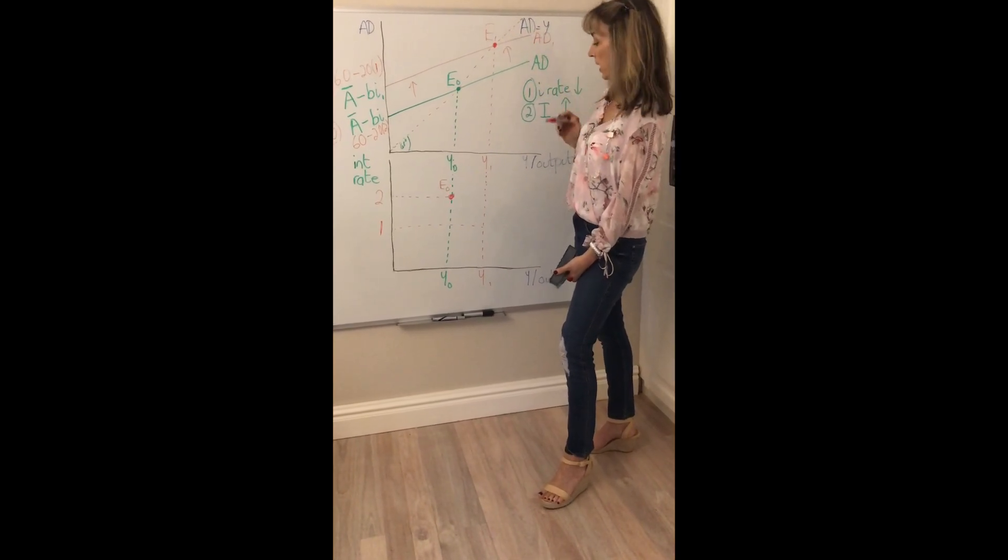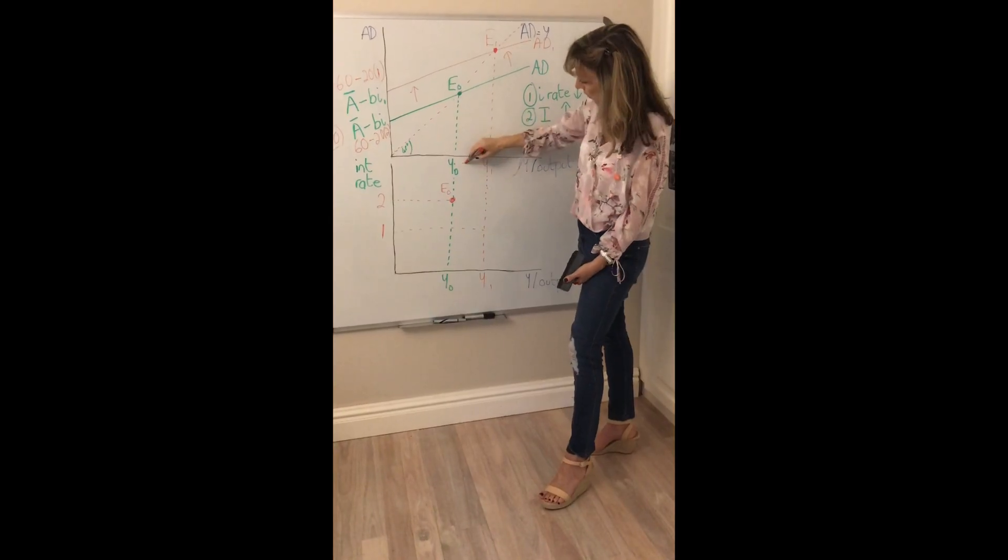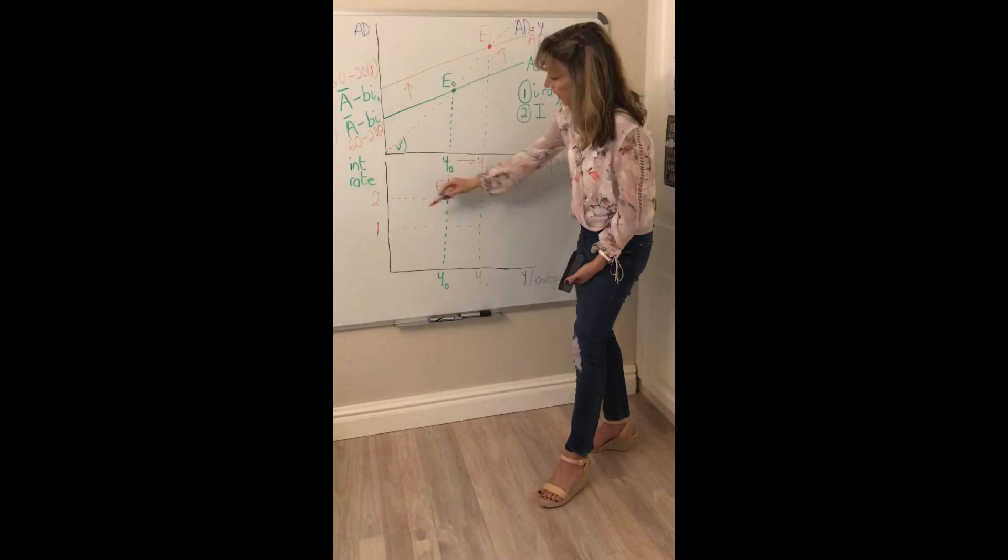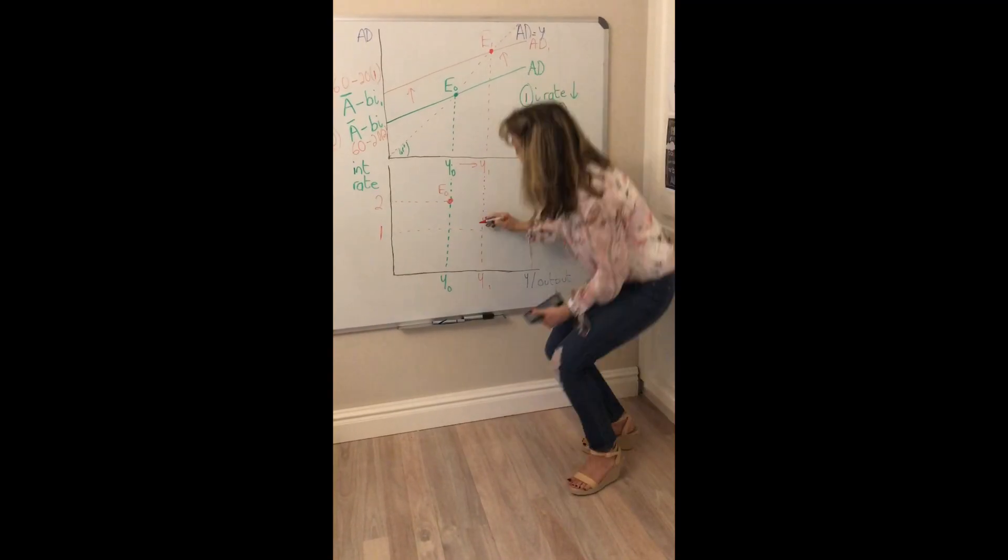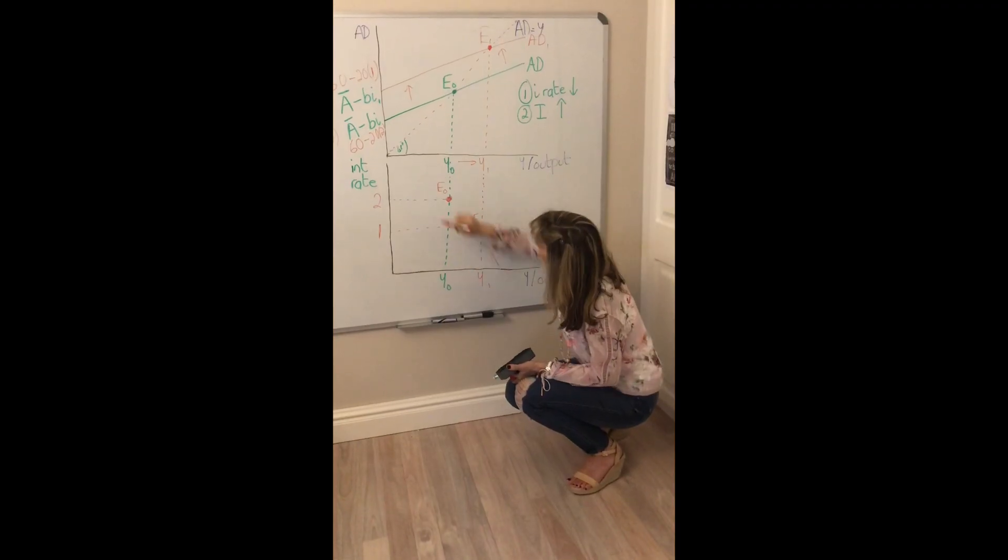What happens when the interest rate falls to say 1%? We can see that as the interest rate fell, investment rose, aggregate demand shifted up and income increased. So at the new equilibrium Y1 is associated with that lower interest rate of 1%. That was our other equilibrium point.